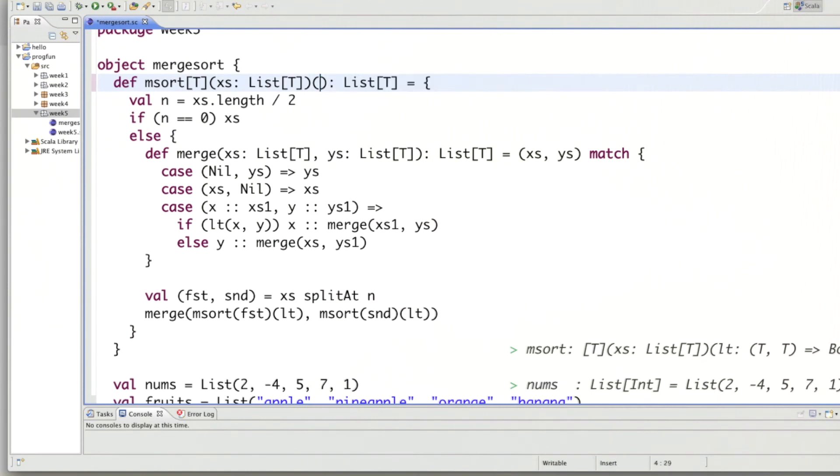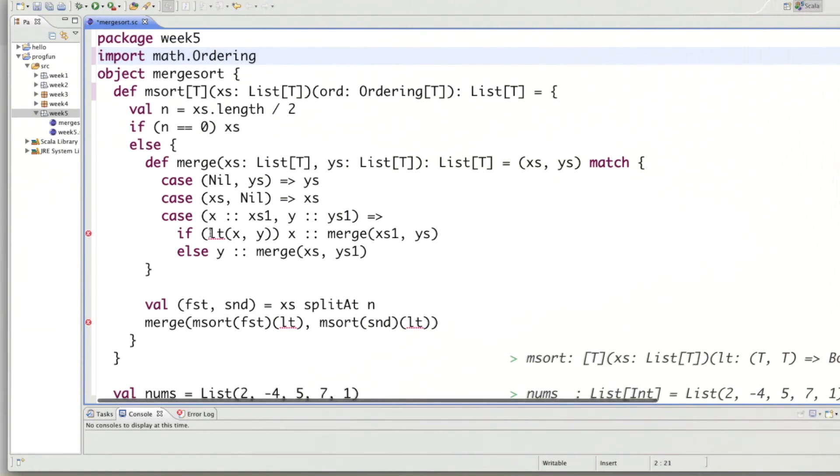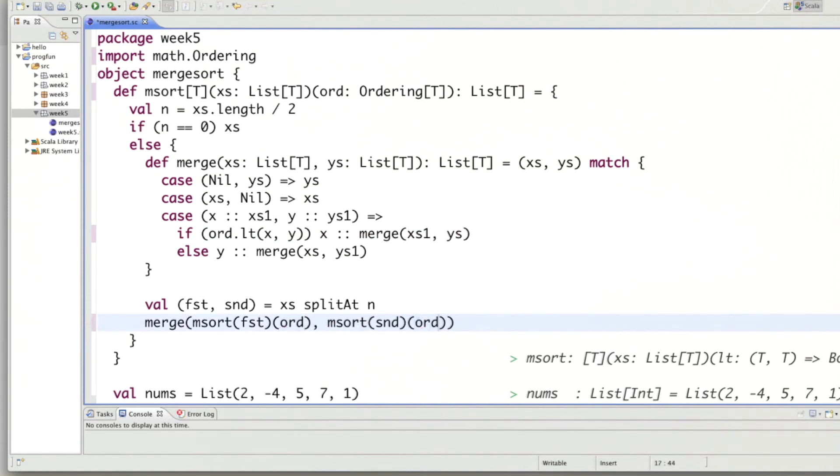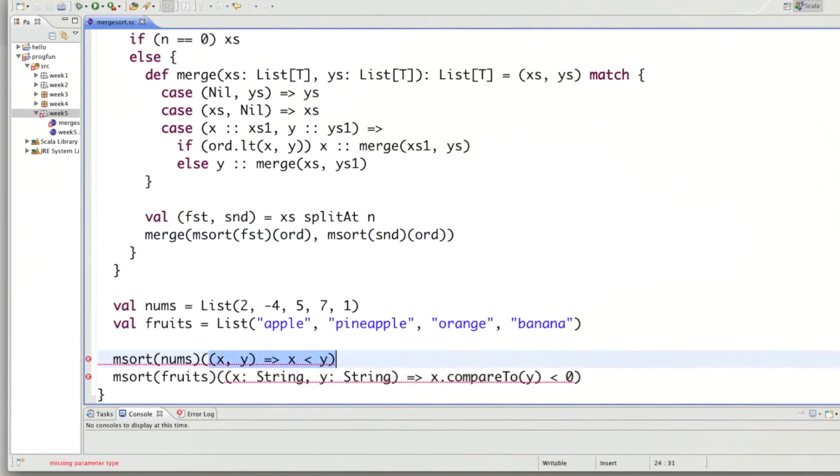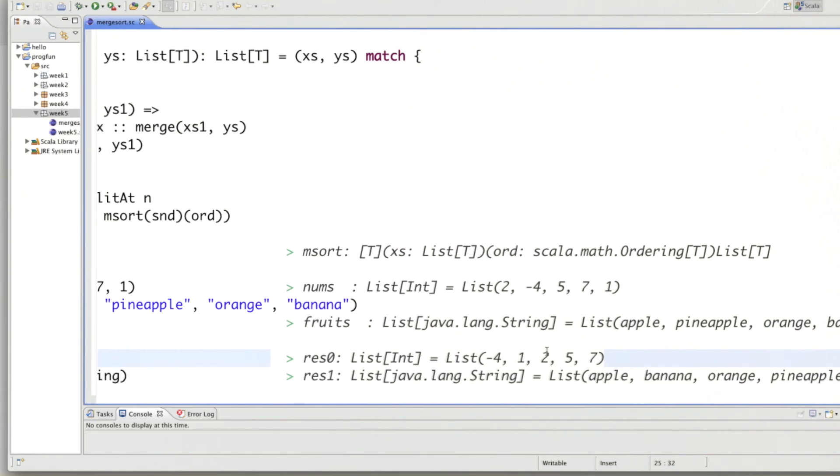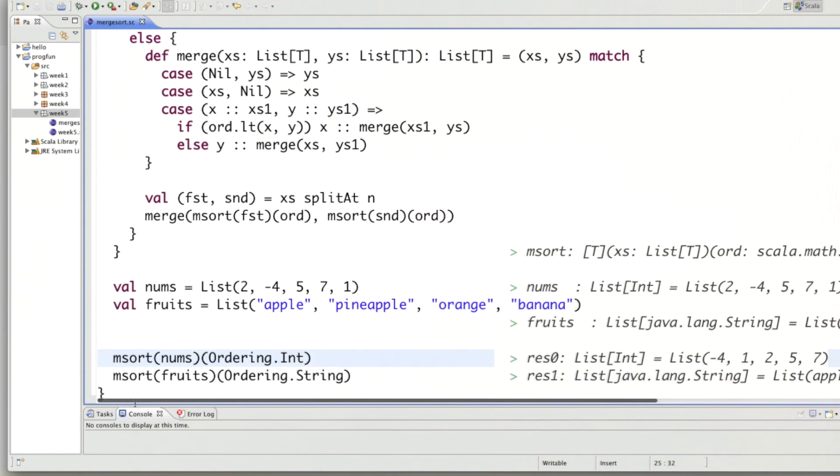Let's go in the worksheet and have a look at it. So instead of less than, we would have a parameter ord of type ordering of t. We should import that first, import math.ordering. And then instead of the less than call here, we would call the less than method of our ordering type. And instead of passing less than a long, we can pass order long. And in our actual calls, we can now use the predefined orderings. That the first one would be ordering.int. That's the ordering on integers that is defined as a value in the ordering object. And for the other one, it would be ordering.string. And the results are the same as before, unsurprisingly.